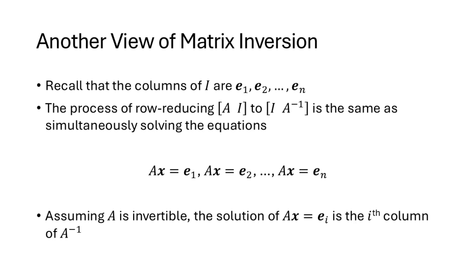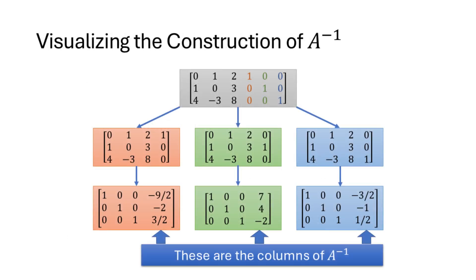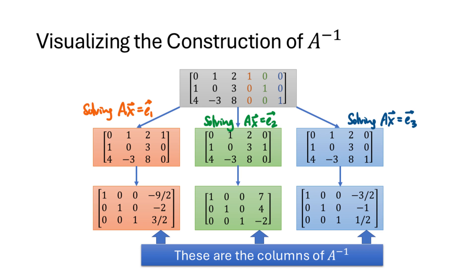Another way to think about row reducing the super-augmented matrix is that we're simultaneously solving the equations AX equals E1, AX equals E2, and so on. The solution of AX equals E_i is in fact the i-th column of A inverse. Looking back at our earlier example, separately row reducing the regularly-augmented matrices for AX = E1, AX = E2, and AX = E3 gives the same three column results, which are precisely the three columns of A inverse.